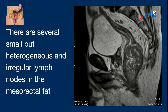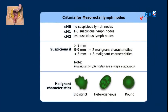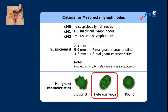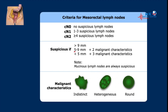There are several suspicious lymph nodes because they are heterogeneous and irregular and they are located in the mesorectal fat. Mesorectal lymph nodes are suspicious when they have malignant characteristics — for instance, when they have an indistinct border, or when they are heterogeneous, or when they are round. When they have these three malignant characteristics, even nodes smaller than 5 mm are suspicious. Nodes between 5 and 9 mm only need 2 malignant characteristics, and lymph nodes larger than 9 mm and mucinous lymph nodes are always suspicious.